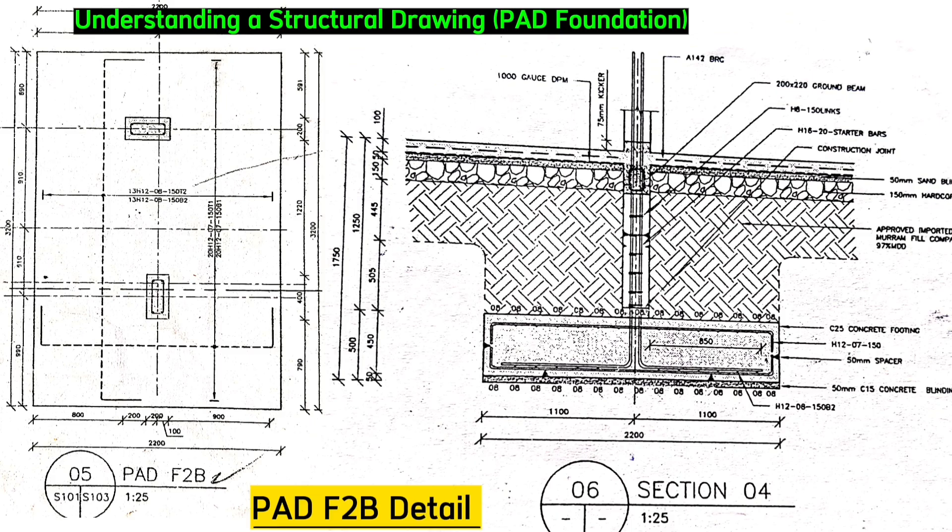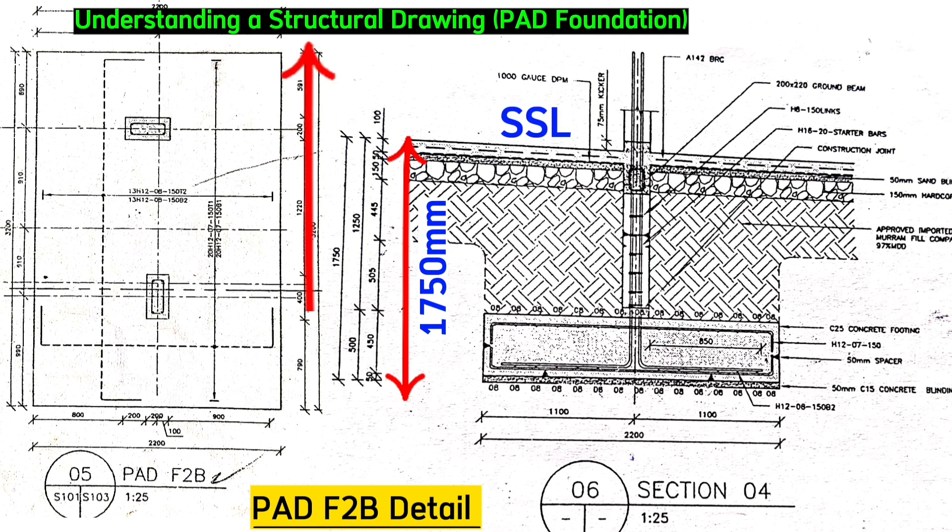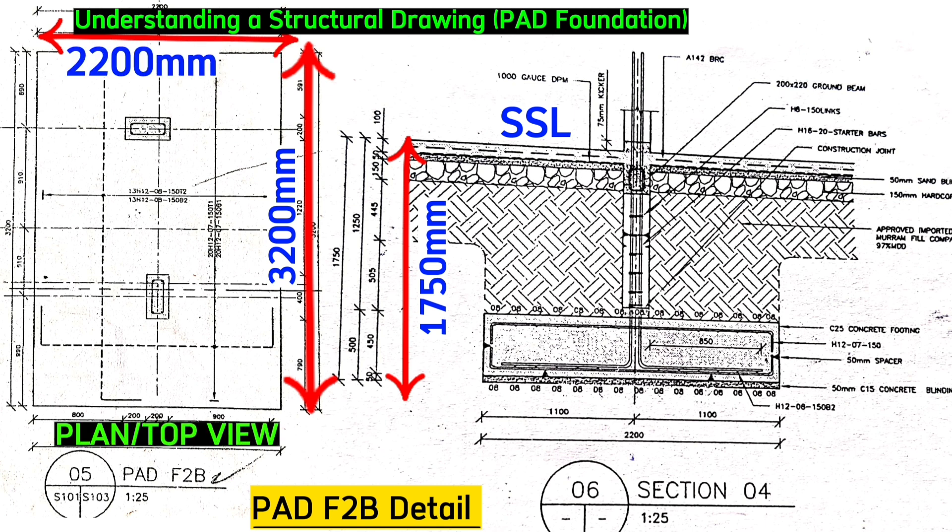Considering our pad F2B, the drawing tells that the depth here will be 1 meter 750 millimeters up the structure slab level. This is its length at 3.2 meters and this is its width as 2.2 meters. This is the plan view as seen from above, whereas this is the side view as seen from aside.